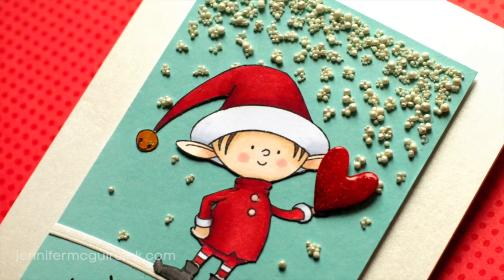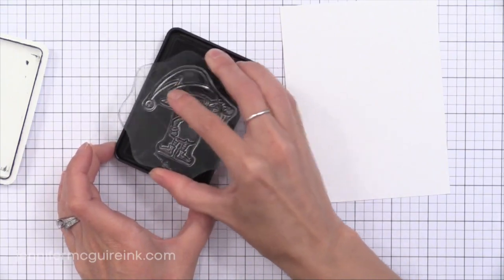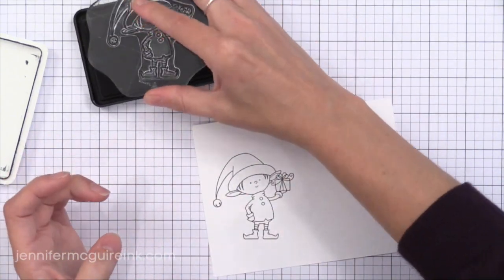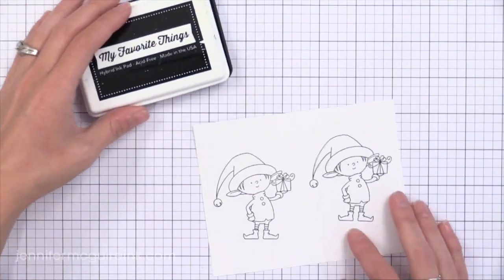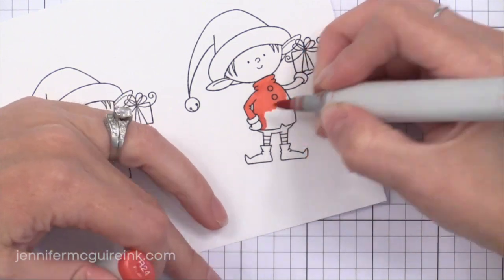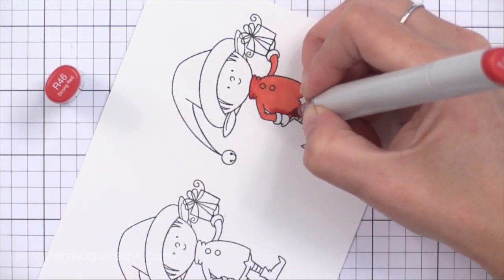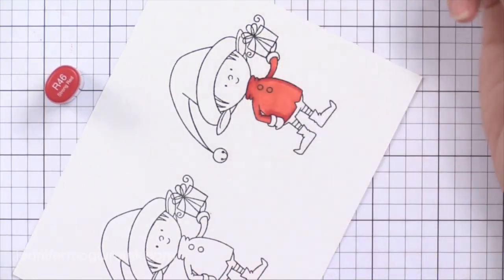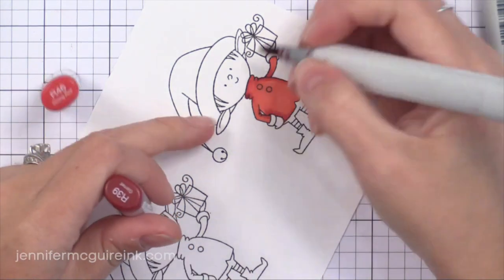While that continues to dry let's create the little elf. This elf is new from My Favorite Things, part of the Santa's Elves set. I'm stamping it with My Favorite Things black hybrid ink on Neenah white cardstock so I can do some Copic coloring. I stamped it twice so if I mess up the first one I have another one ready to go. Now I'm not going to take a lot of time to show you all the Copic coloring because I didn't really do anything profound or fancy. I just did some quick coloring. I used two or three shades of the same color and just did some basic shading.